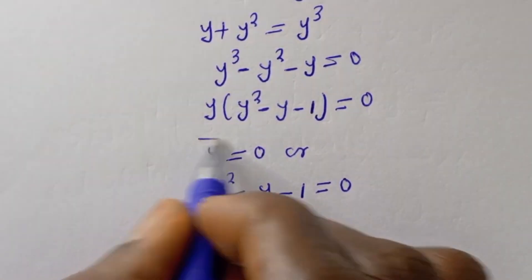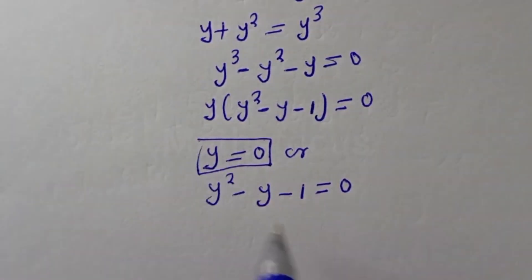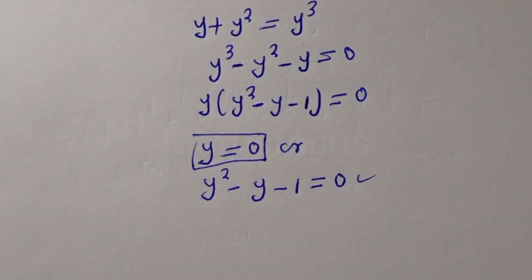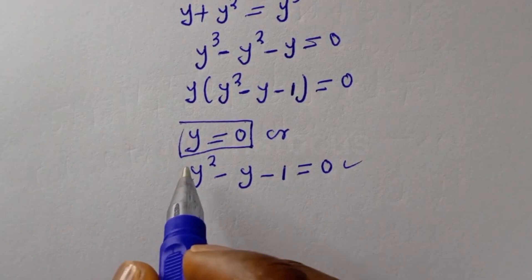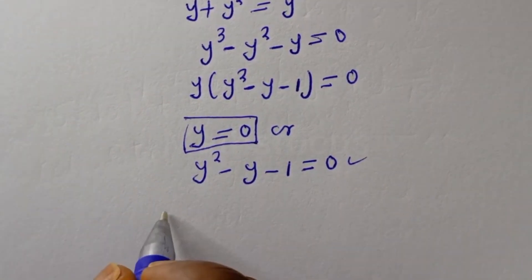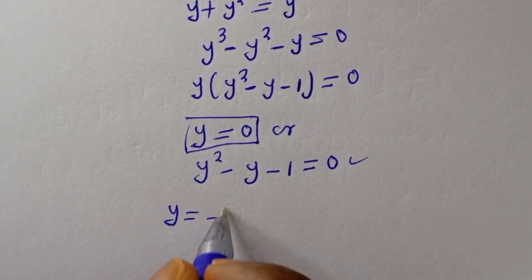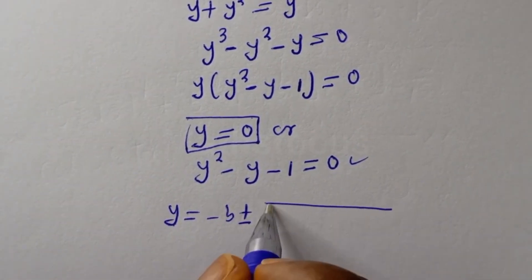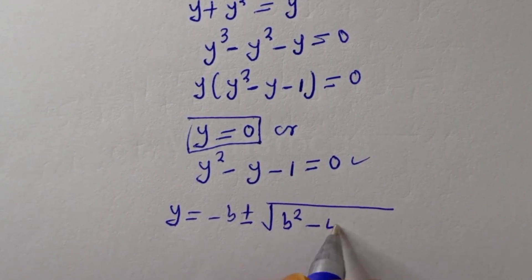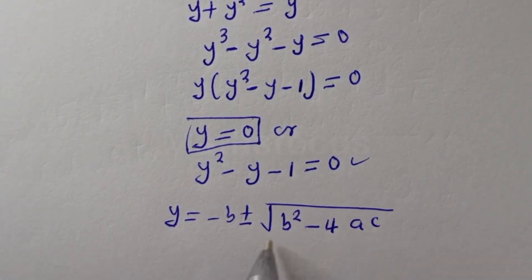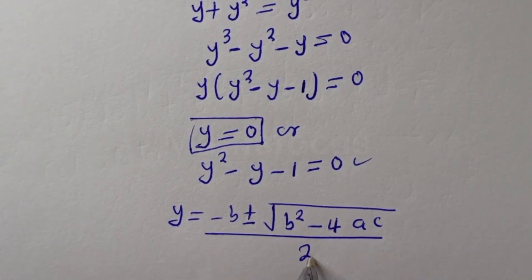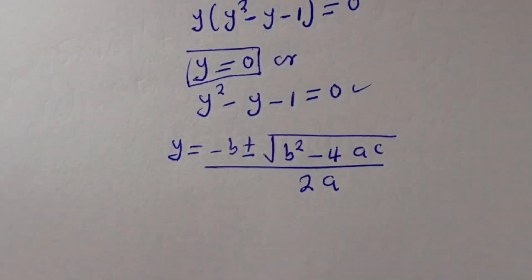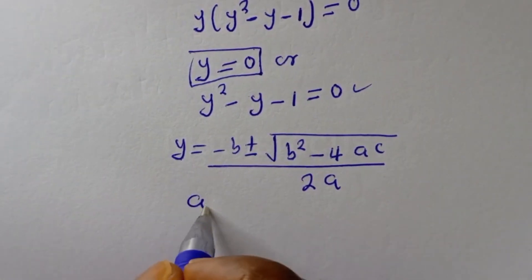There are two cases: y equals zero from the first case, or y squared minus y minus 1 equals zero from the second case, which is a quadratic equation. Let's use the quadratic formula: y equals minus b plus or minus square root of b squared minus 4ac, all over 2a.